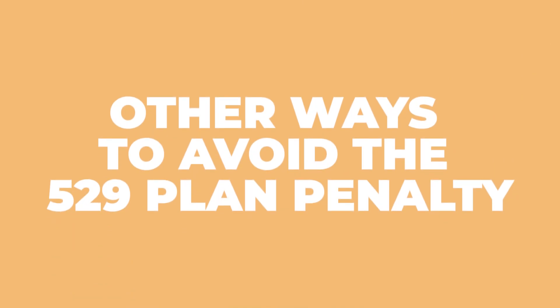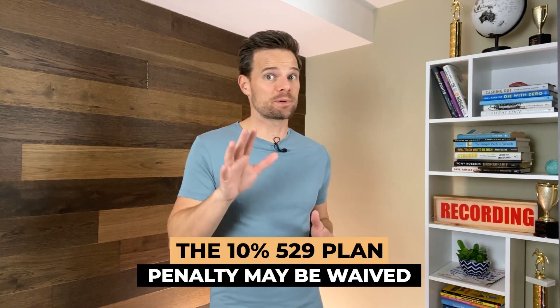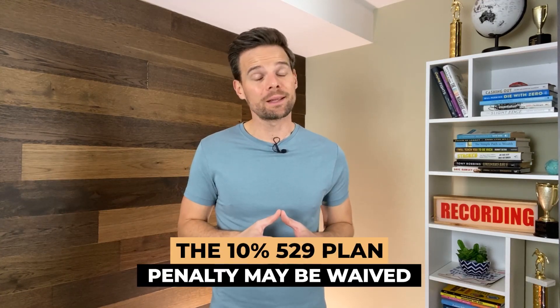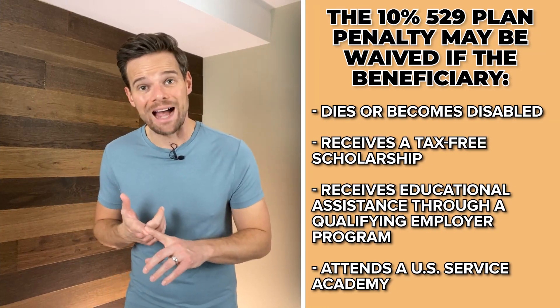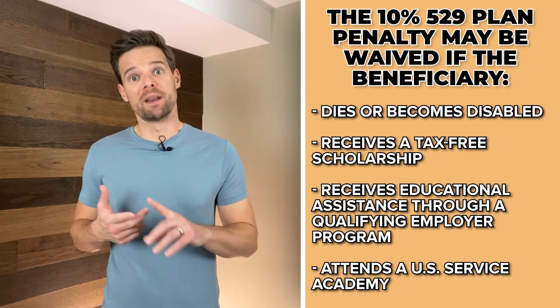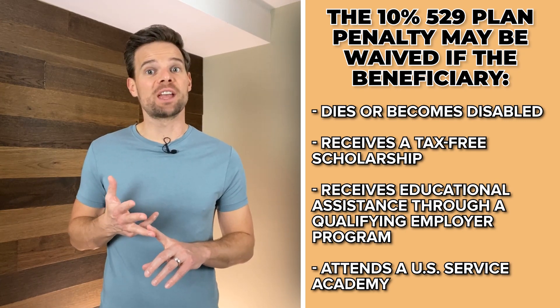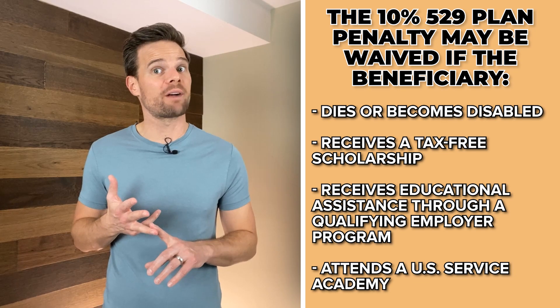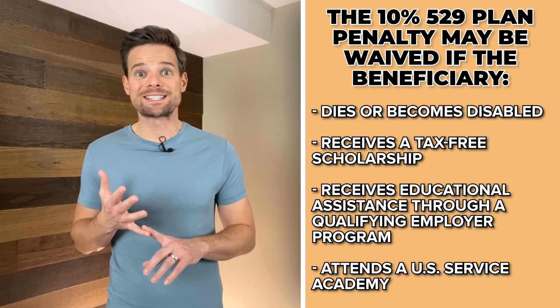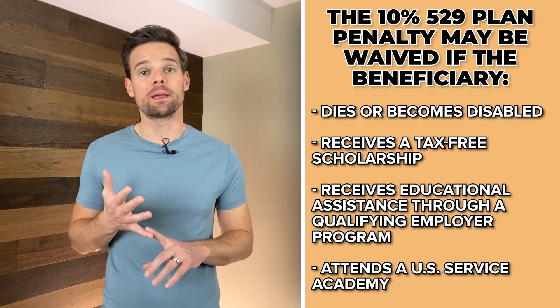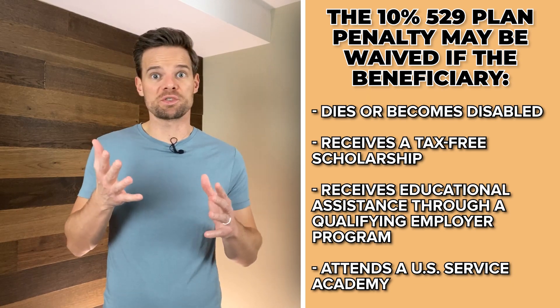There are some other ways to avoid the 529 plan penalty, though they are less common. It's important to remember that in these scenarios, the earnings portion of the distribution is still subject to income tax. The 10% 529 plan penalty may be waived if: the beneficiary dies or becomes disabled; the beneficiary receives a tax-free scholarship; the beneficiary receives educational assistance through a qualifying employer program; or the beneficiary attends a U.S. service academy — Army, Navy, Air Force, Coast Guard, or Merchant Marine.